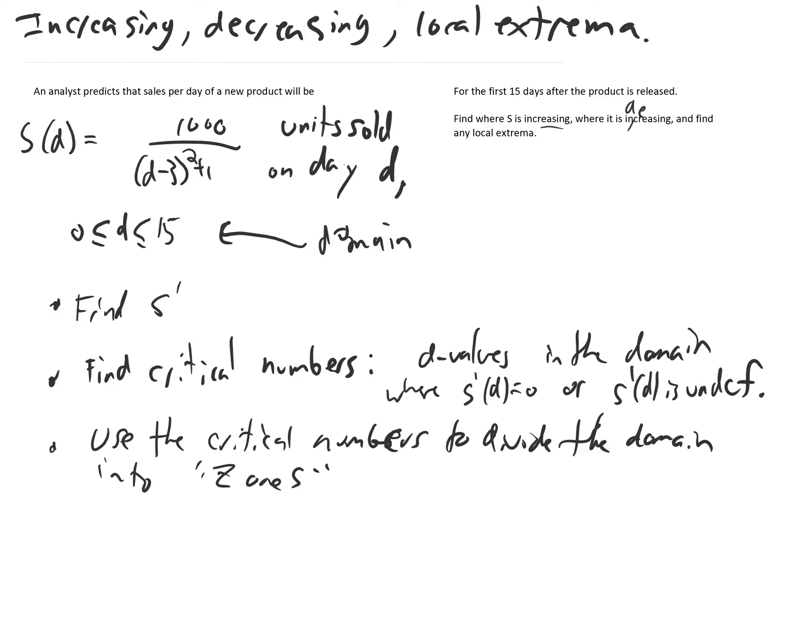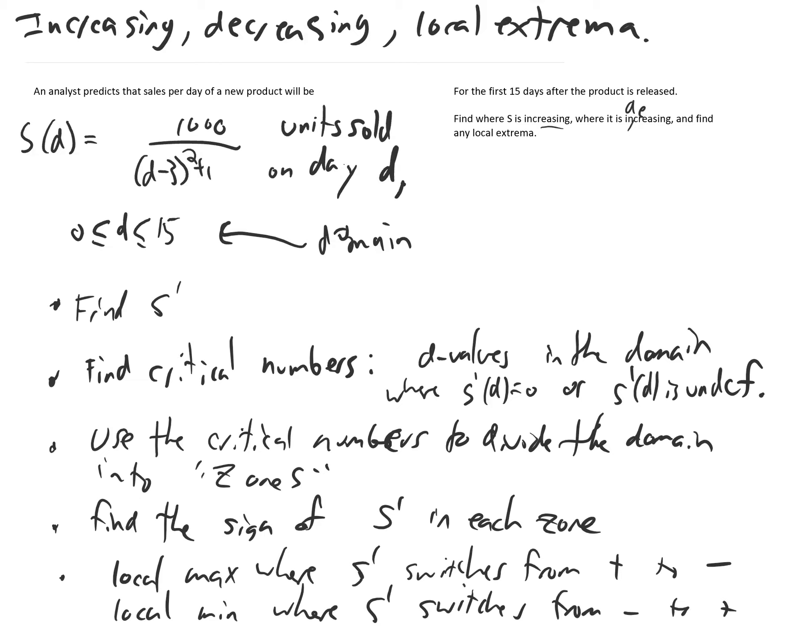So the next step is to use those critical numbers to divide up the domain into zones. And then we find the sign of S prime in the interior of each zone by checking S prime, whether it's positive or negative, at any convenient point in that interval. Once we've found the sign of S prime in each zone, that's like completing a sign chart. Then we'll be able to find local extrema using this logic.